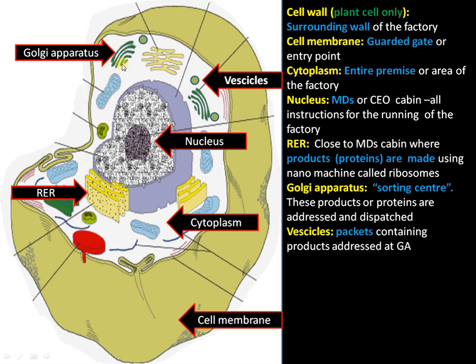The products are made in the RER, further modified, and then reach the Golgi apparatus where they are properly addressed. These proteins may be required in the nucleus, outside the cell, in the mitochondria, or in the lysosome. Chemical tags are given, the proteins are packaged inside vesicles, and dispatched to the correct destinations.